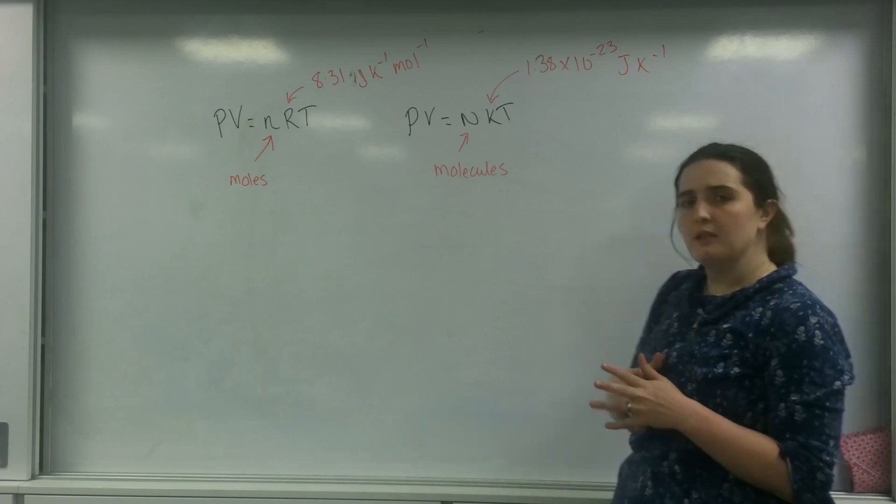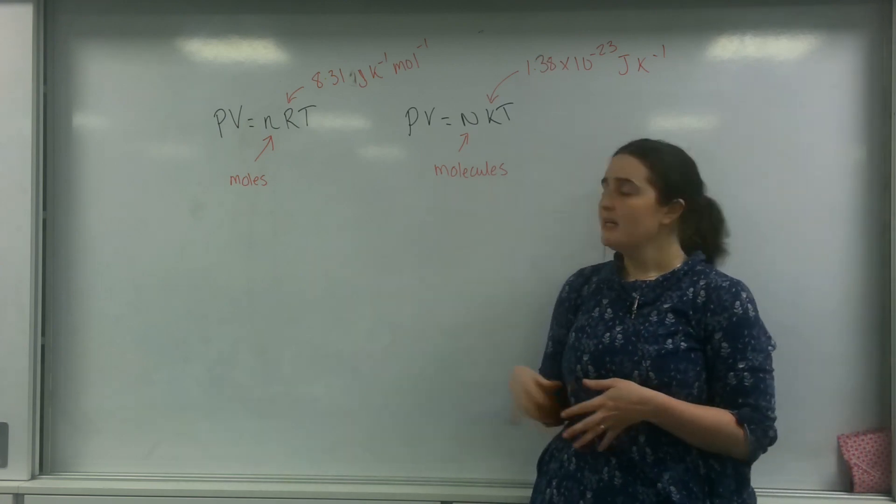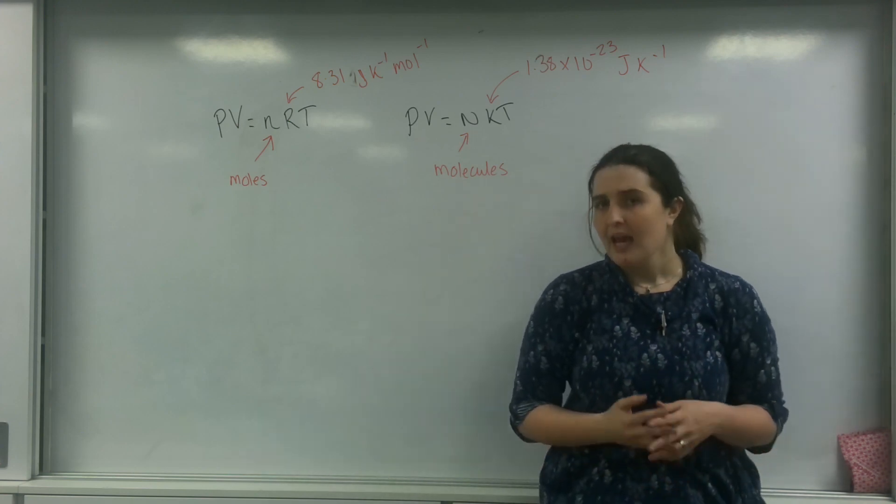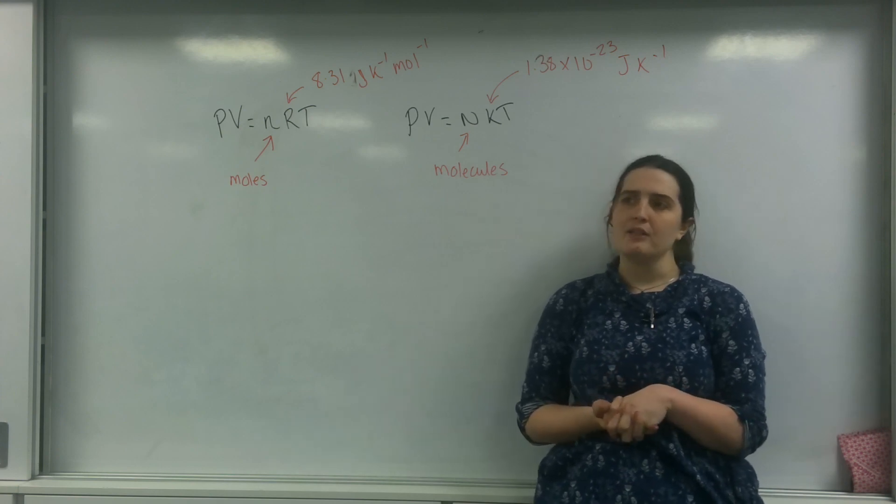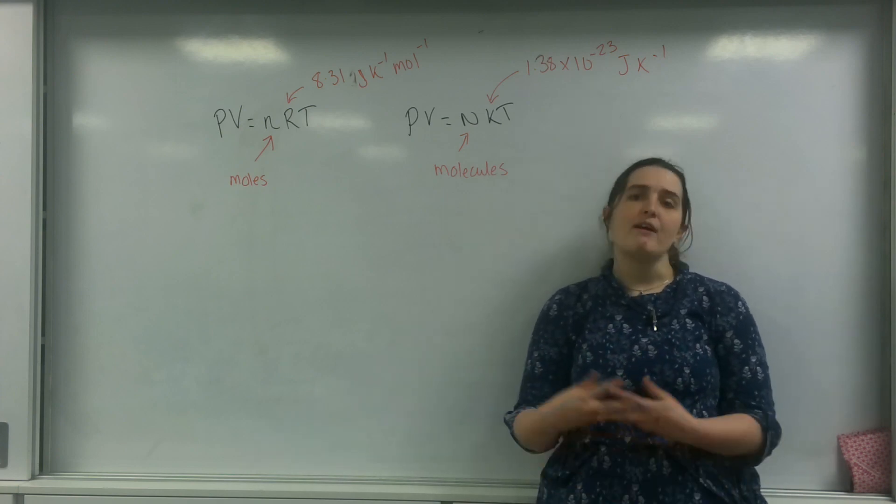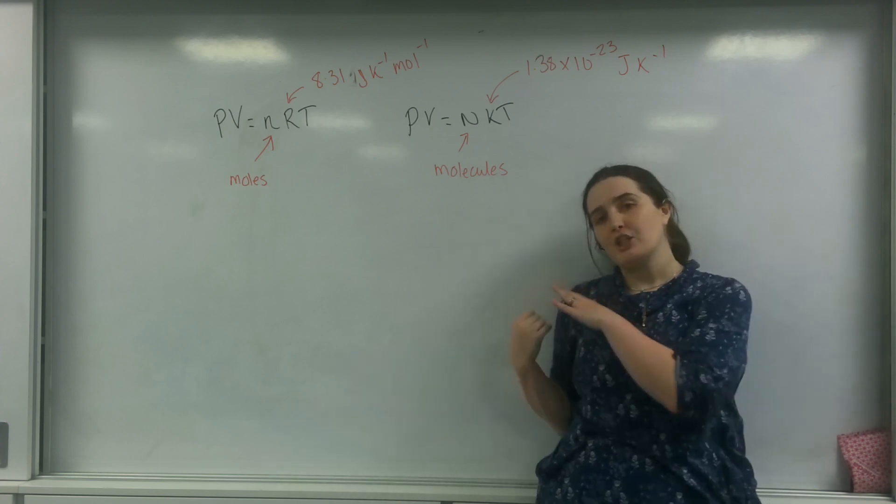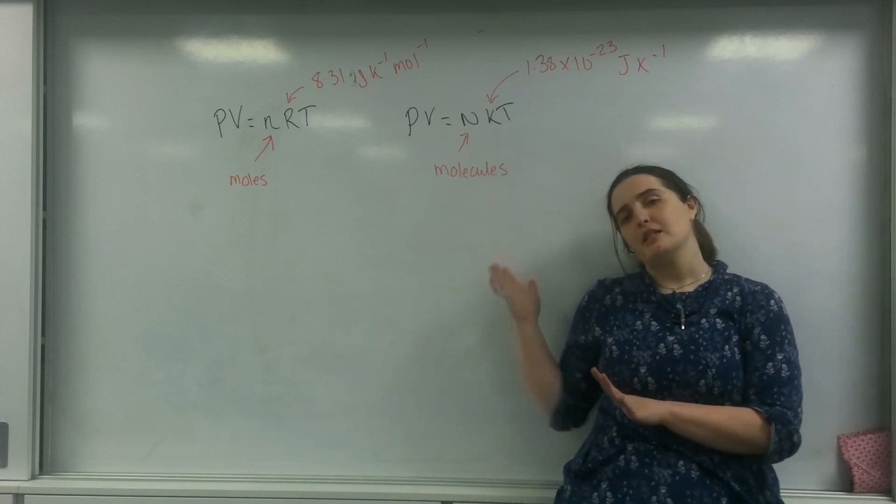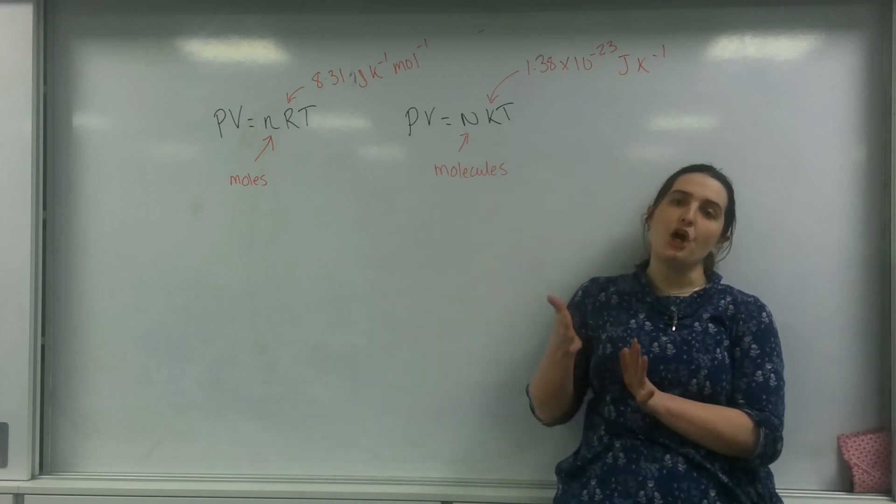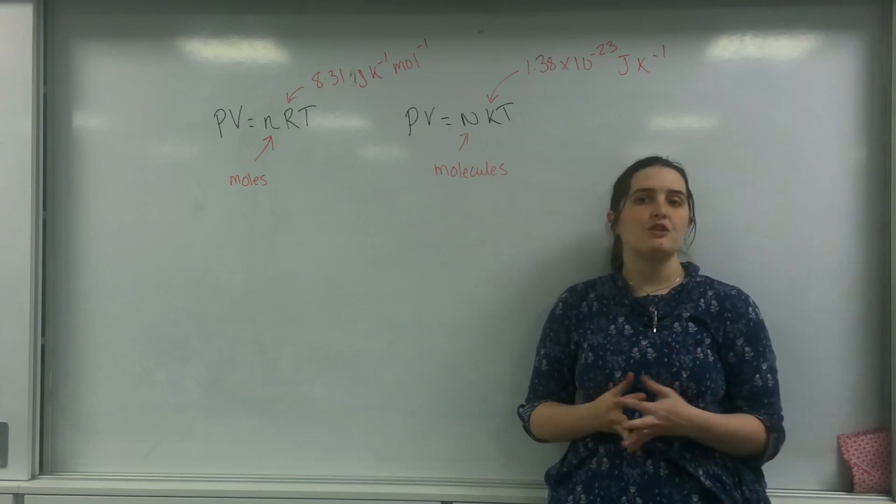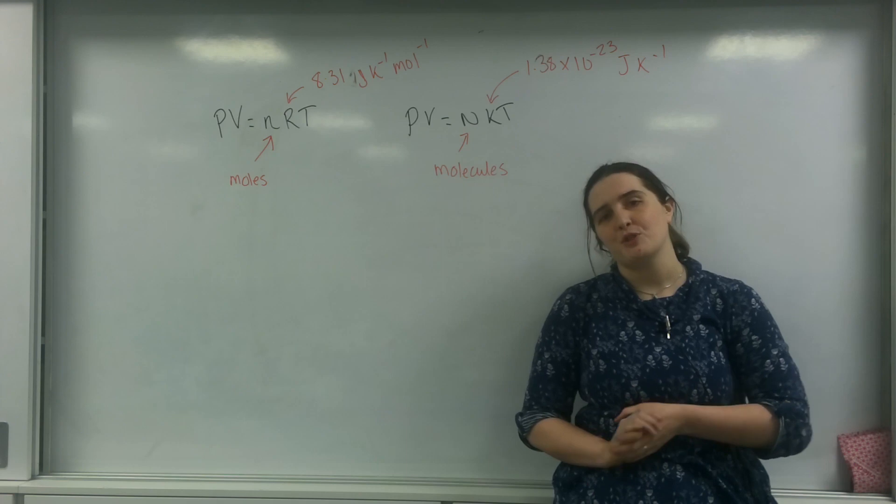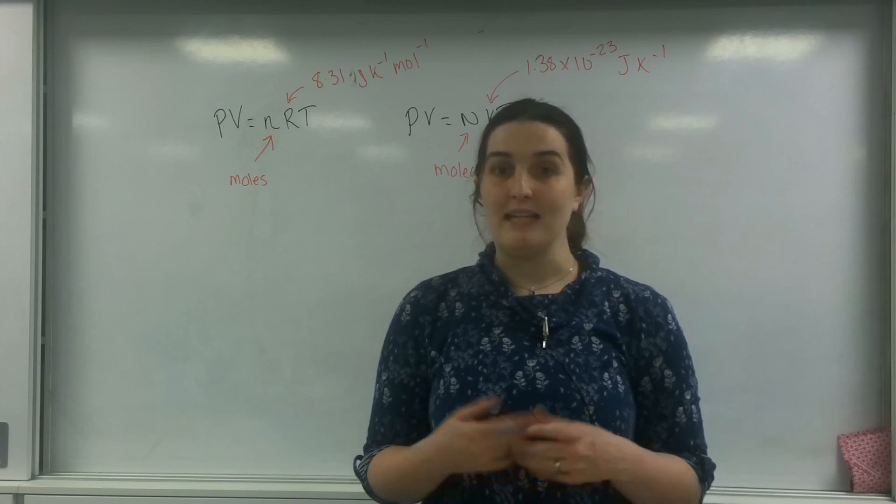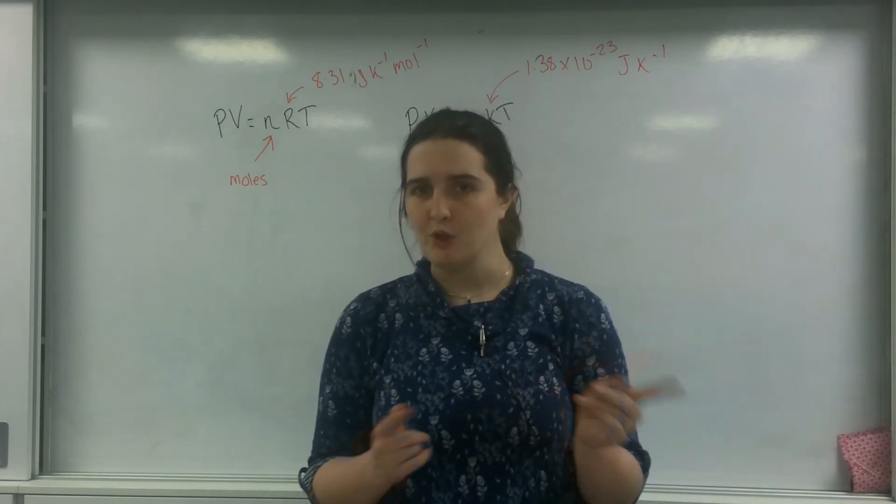Now the reason we use both depends on the situation. This PV equals NKT, the reason we like knowing how many molecules we have is because if we're working out things of leakages or radioactive reactions, we actually do want to know how many molecules there are in a system. With this formula here, we can actually start looking at the kinetic energy of those molecules and this is why it's called the Boltzmann's constant because a guy called Stefan Boltzmann started looking at kinetic energy of particles and how that related to temperature.